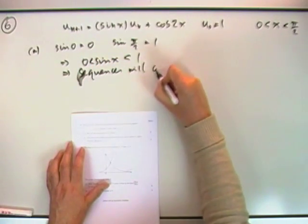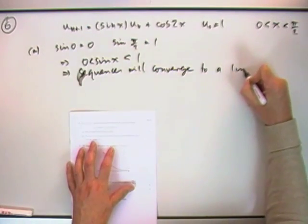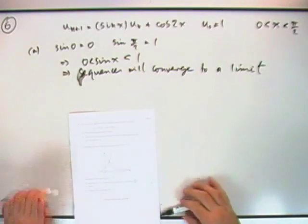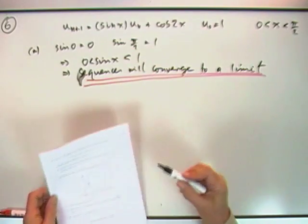So it's a proper fraction, which means the terms, or the sequence I could say, will converge. Sequence will converge, multiplying by fractions each time, to a limit. Will that do? Well, choose your own sentence. That will appease the marker more.